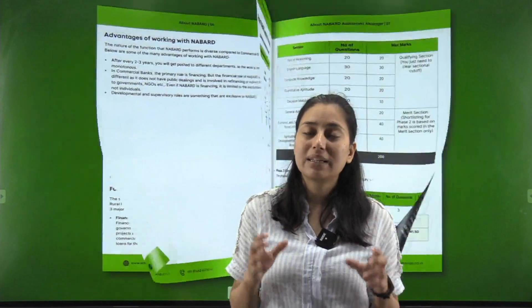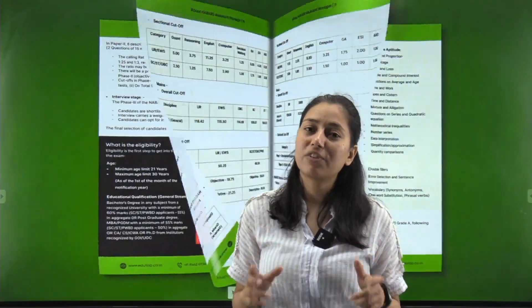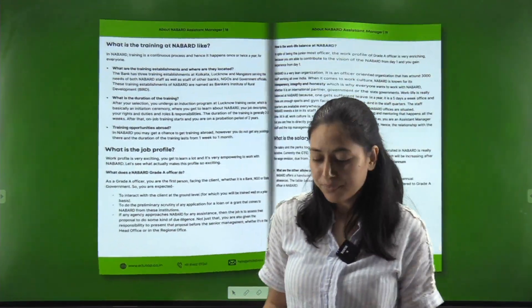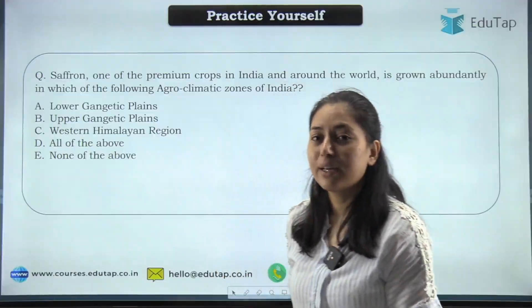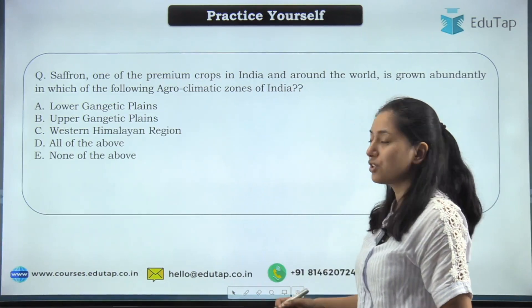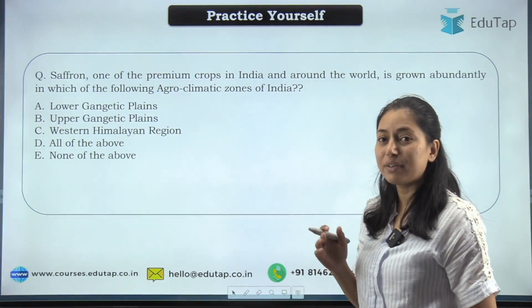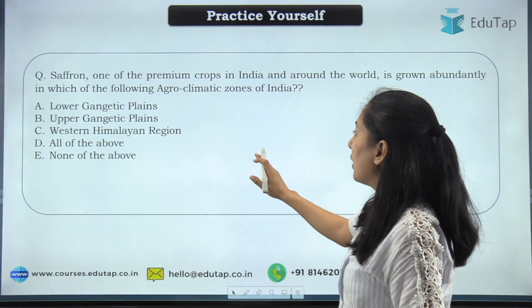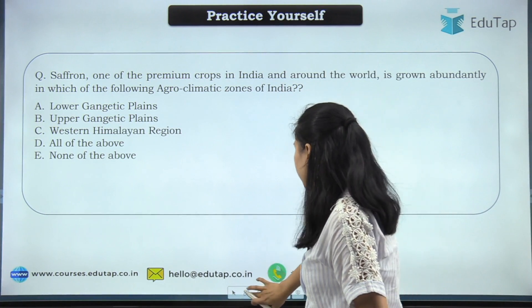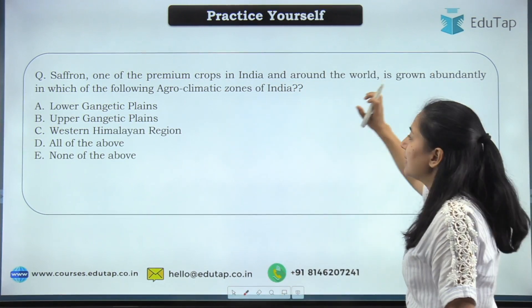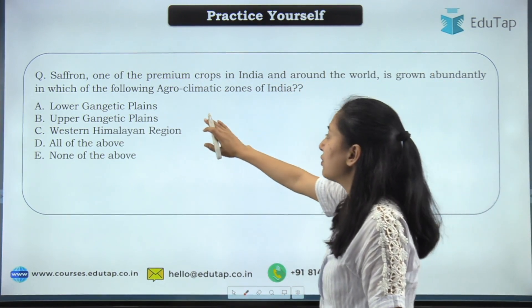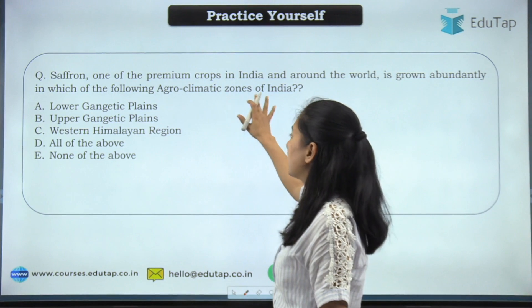Though this guidebook is free in monetary terms, the information it provides is invaluable. Now, the question I gave you in the previous video was: saffron, one of the premium crops in India and around the world, is grown abundantly in which of the following agro-climatic zones of India?